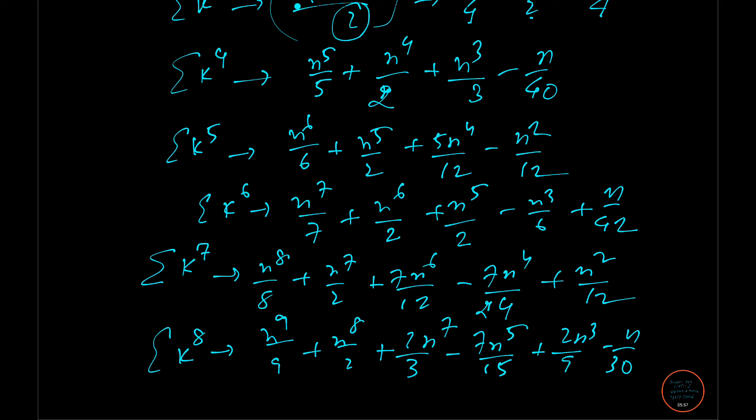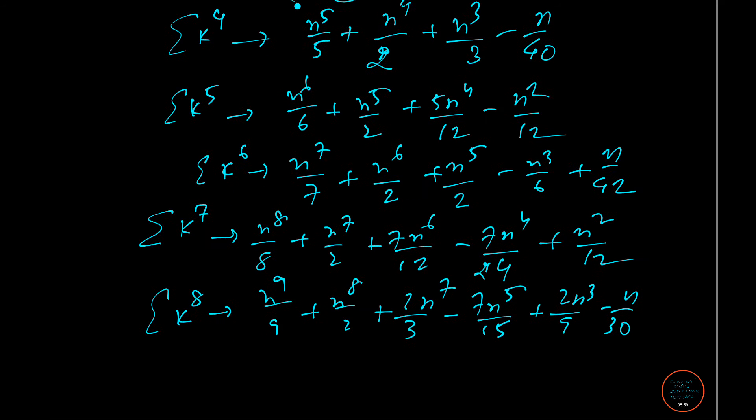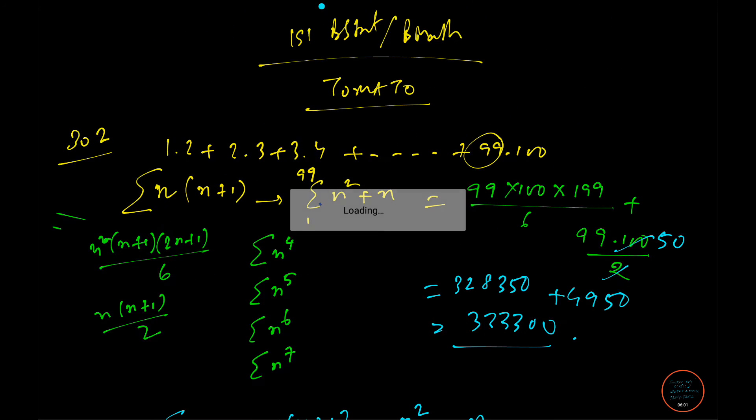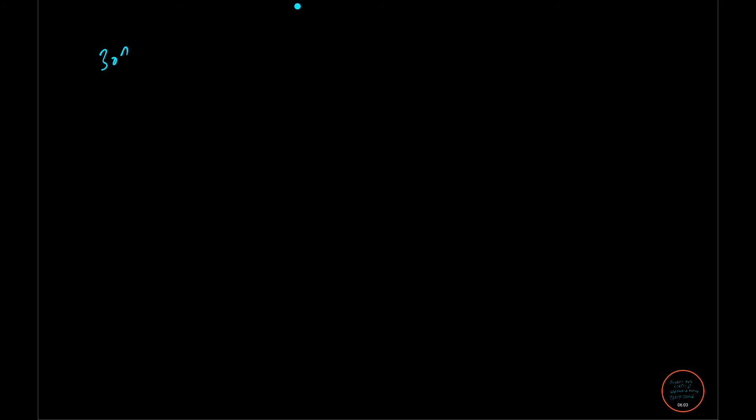Now I am proceeding to the next question. Question number 303—don't worry, I am not going to solve 302 again. This time they have given 1×2×3 + 2×3×4 + ... + 20×21×22. You can simply see it is n(n+1)(n+2).